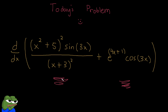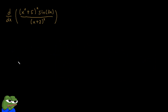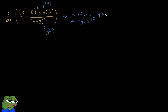Let's start by taking the derivative of our first term. Now that we've isolated it, we can analyze what to do. We can notice that it's a fraction, meaning we probably have to use the quotient rule. We can treat the entire numerator as our f(x) and the entire denominator as our g(x). The derivative of f(x) over g(x) is the low function times the derivative of the high function, minus the high function times the derivative of the low function, all over the low function squared.